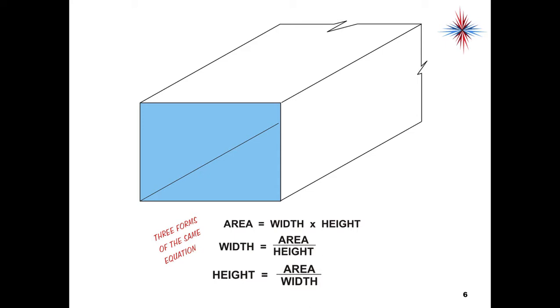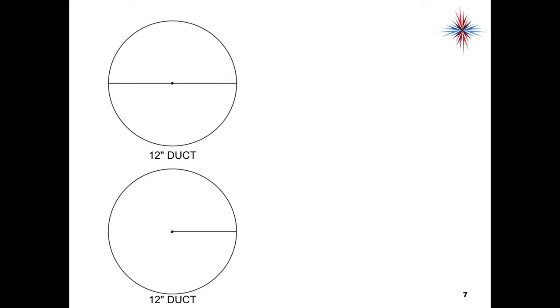For round duct, we have to go to a little bit of a different formula. Round duct has diameter and radius—two different measurements. Diameter is 12 inches in a 12-inch round duct. It's all the way across. If you take a tape measure, put it across the end and measure it, you would have 12 inches. That's what our duct size is based on. However, half of that, from the center to any one of the outside points, is the radius. In a 12-inch duct, the radius is going to be 6 inches.